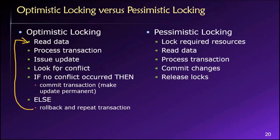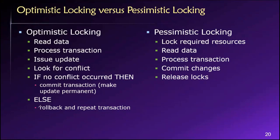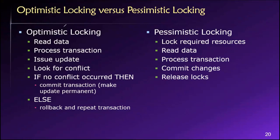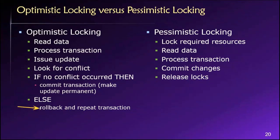Using our previous example of two users trying to modify the same inventory value at the same time — maybe when we looked to see if things were as we'd expect, we discovered they were not. So we can't save our changes; instead we start over. We read the data again, process the same things — reads, writes, updates, deletes — then look for a conflict. If a conflict occurred, we start over again, and keep doing that over and over until no conflict occurs, at which point we commit the changes.